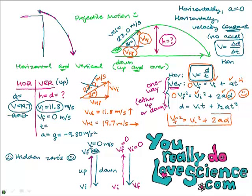So: VF² = VI² + 2ad. Plugging in: the final velocity on the way up is zero (squared), the initial vertical velocity is 11.8 (squared), plus 2 times negative 9.81 times d. We rearrange: 0 = 139.24 + (negative 19.62)d, so negative 139.24 = negative 19.62 × d. Divide both sides by negative 19.62 and you get your distance.